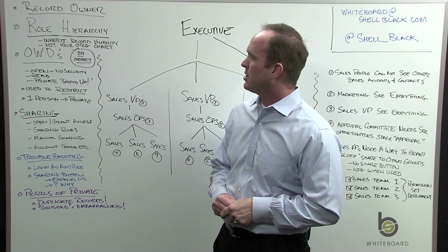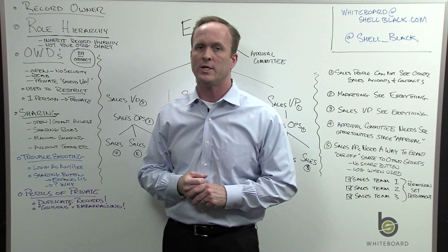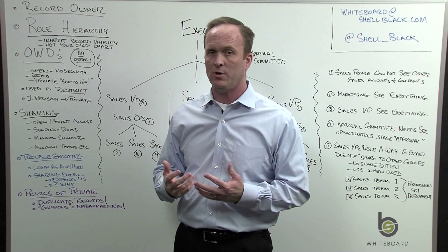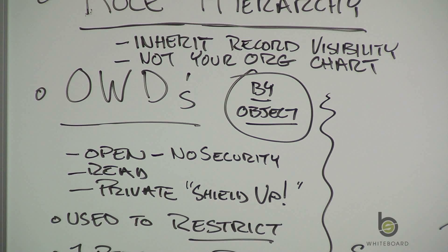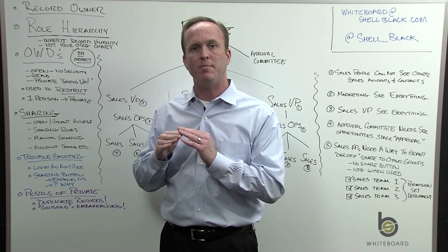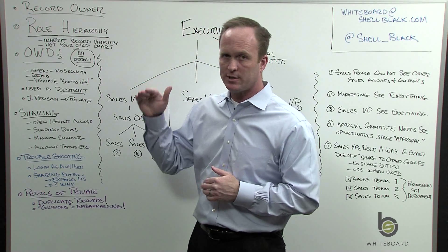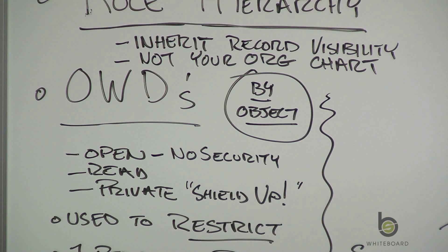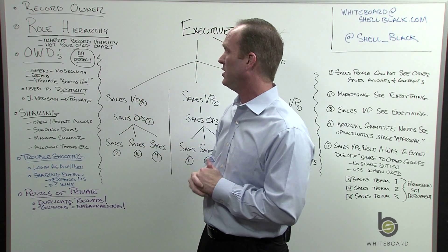I'm going to start with OWDs — Organizational Wide Defaults. By object — say leads, accounts and contacts, cases, opportunities, or custom objects — OWDs set the baseline security for that object. There are three tiers you can set. The default is open, which is really no security: everybody can see everything, it's a big love fest.